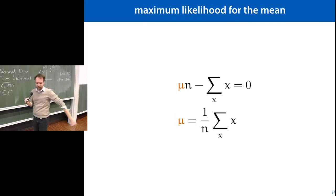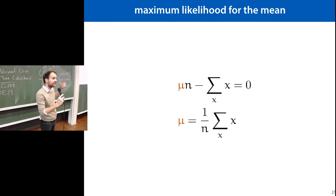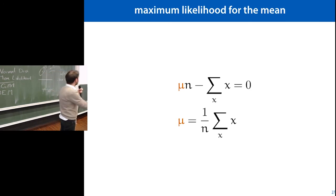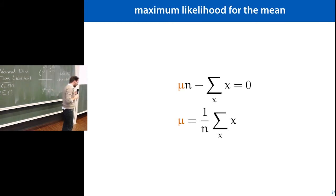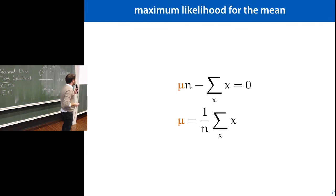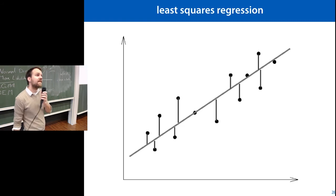The key takeaway is that applying the maximum likelihood principle to a normal distribution and working through the math gives us very natural, familiar solutions — the mean, and for σ, the biased estimator that divides by n rather than n−1. It doesn't always give the best estimator, but it gives a good one. That's the basic maximum likelihood principle.